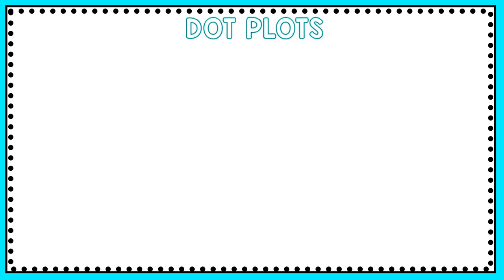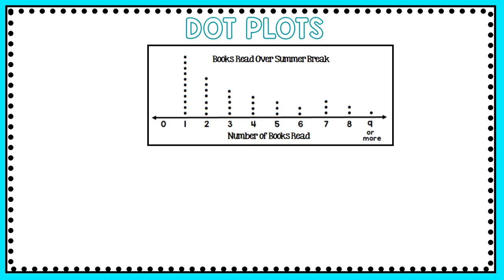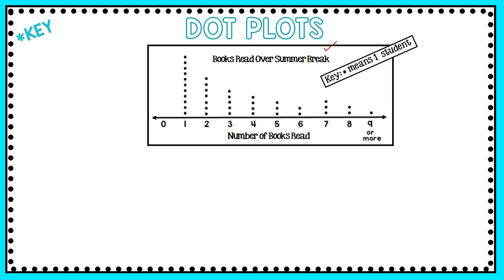Here is a very basic dot plot. As you can see, you have a title, and this dot plot is about the number of books read over summer break by students. A really important part of dot plots is the key — you have to pay attention to the key, as it gives you helpful information so that you're reading the graph correctly. In this case, the key tells me that one dot means one student.